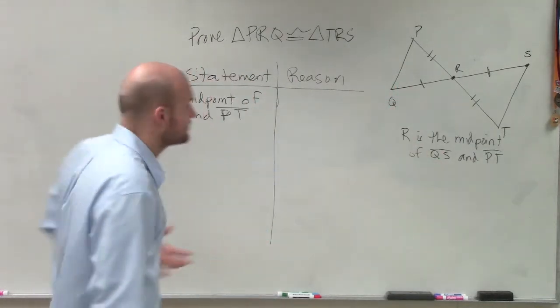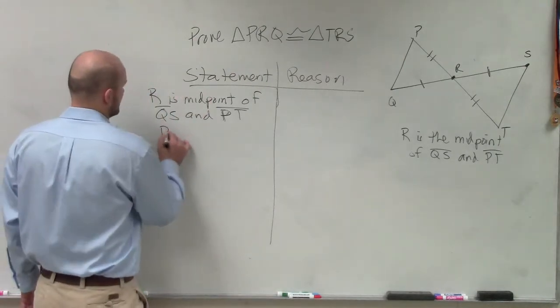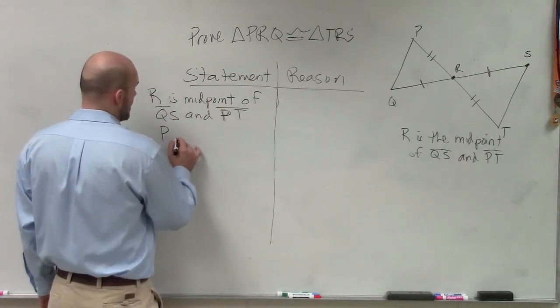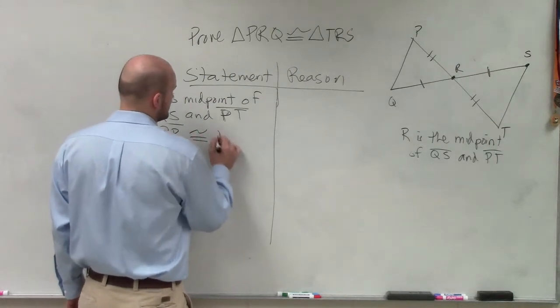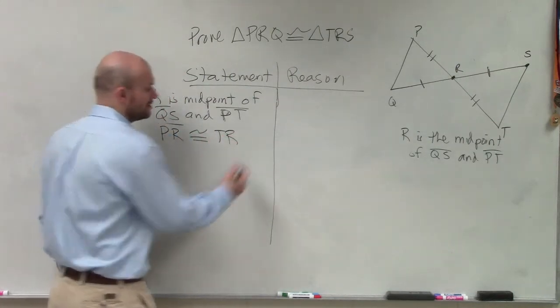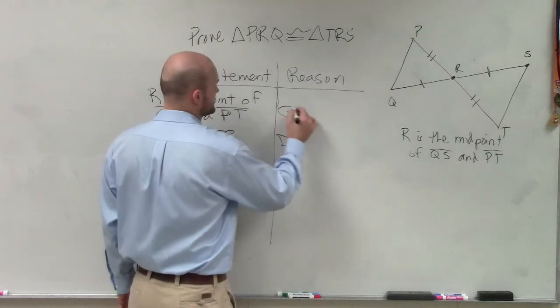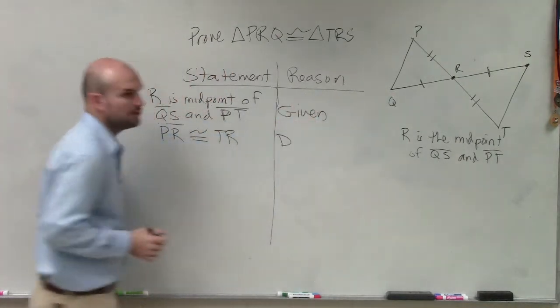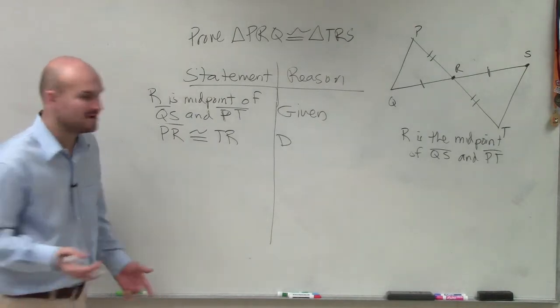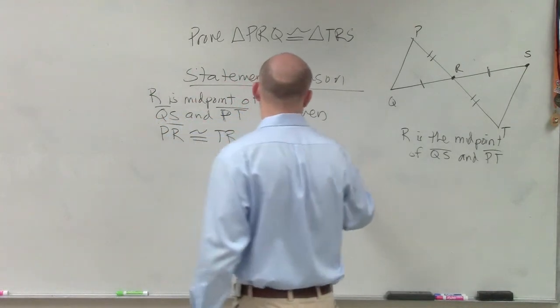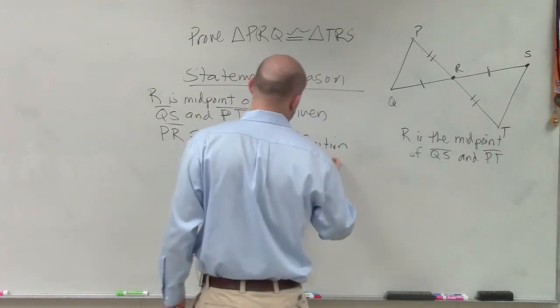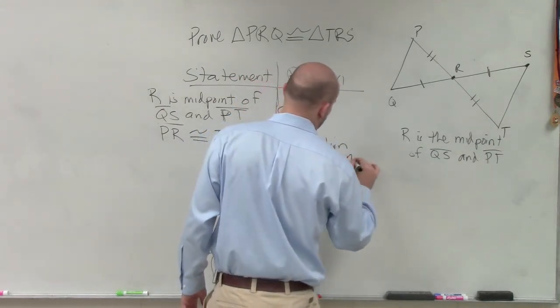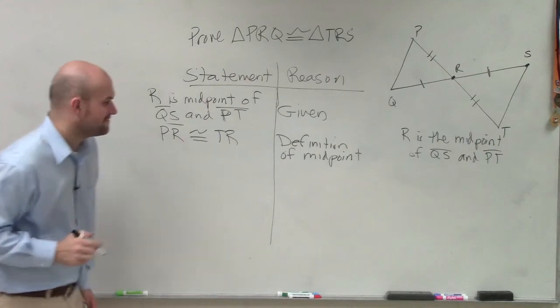You have to distinguish what you know. So now I can say that line PR is congruent to line TR, right? Oh, so this part is given. So why do we know they're equal to each other? Because that's the definition of a midpoint. So you say definition of a midpoint.